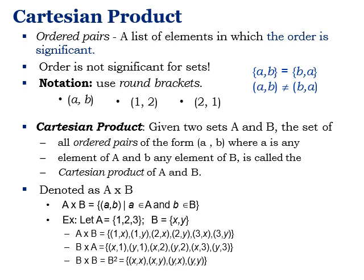The Cartesian product B × A starts with elements of B first: {(x,1), (y,1), (x,2), (y,2), (x,3), (y,3)}. You can also have the Cartesian product of a set with itself, called B squared (B²), which gives: {(x,x), (x,y), (y,x), (y,y)}.